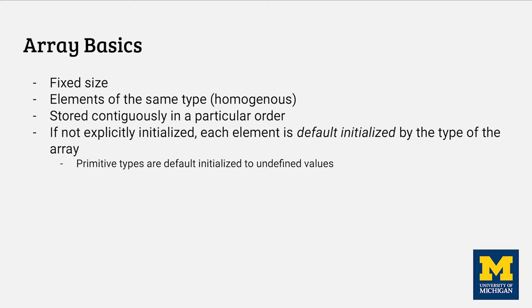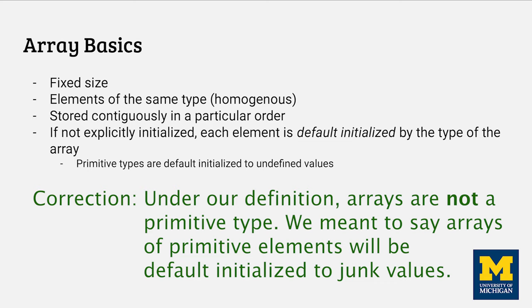Arrays are always a fixed size. As mentioned, there are also elements of the same kind and are stored one after another in memory. A really important concept that might save you some frustration down the road is that primitive types are default initialized to undefined values. Arrays are a primitive type, so if you don't explicitly set the contents of it somehow, you'll wind up with junk memory.